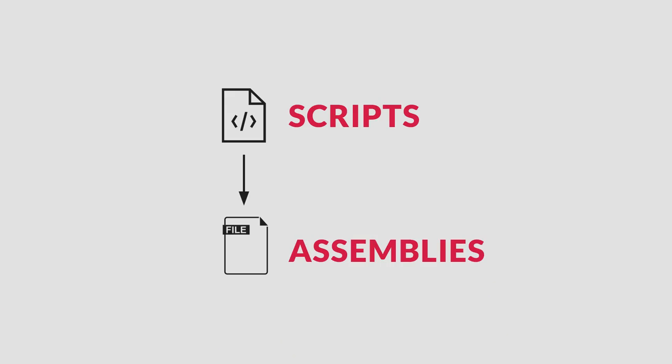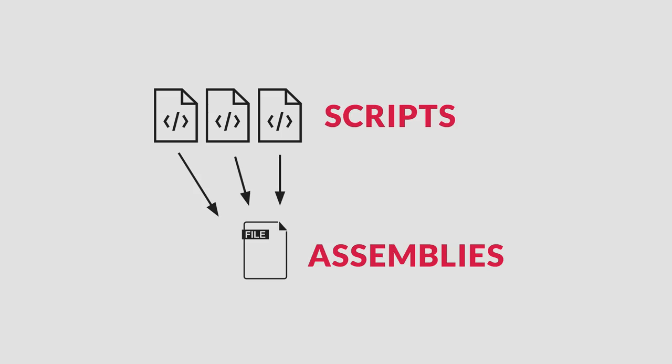Normally, Unity automatically defines how scripts compile to managed assemblies. This means that code in your scripts gets outputted to files defined by Unity. Typically, as you add more scripts, it will take longer for the editor to compile these files. This can lead to annoying wait times as your project gets bigger.